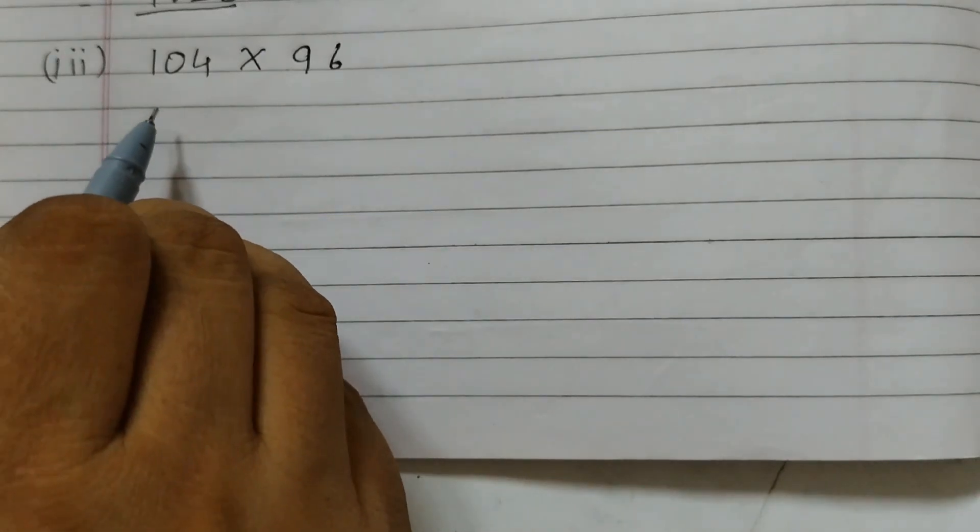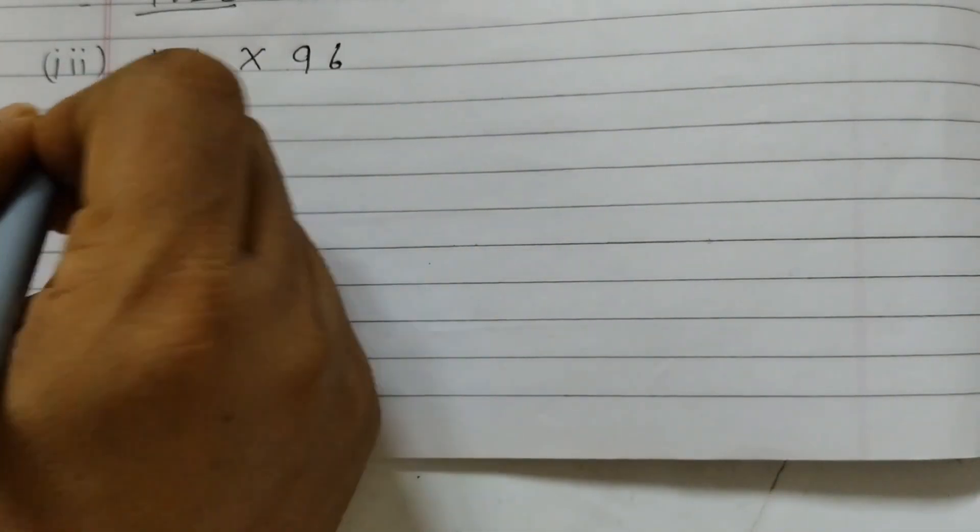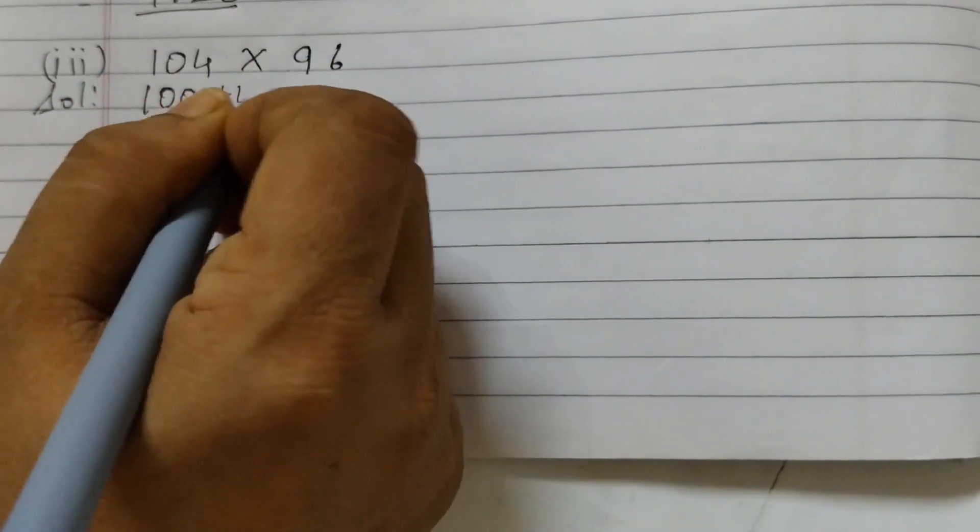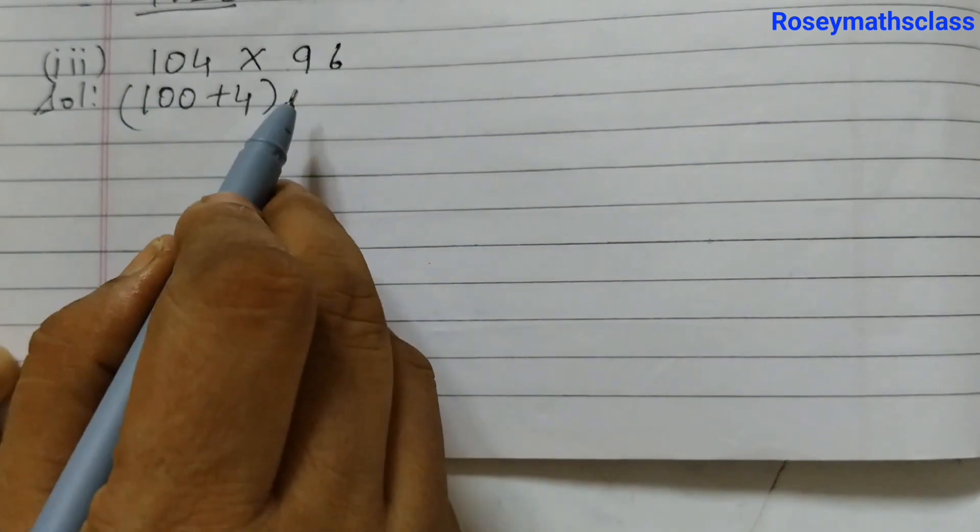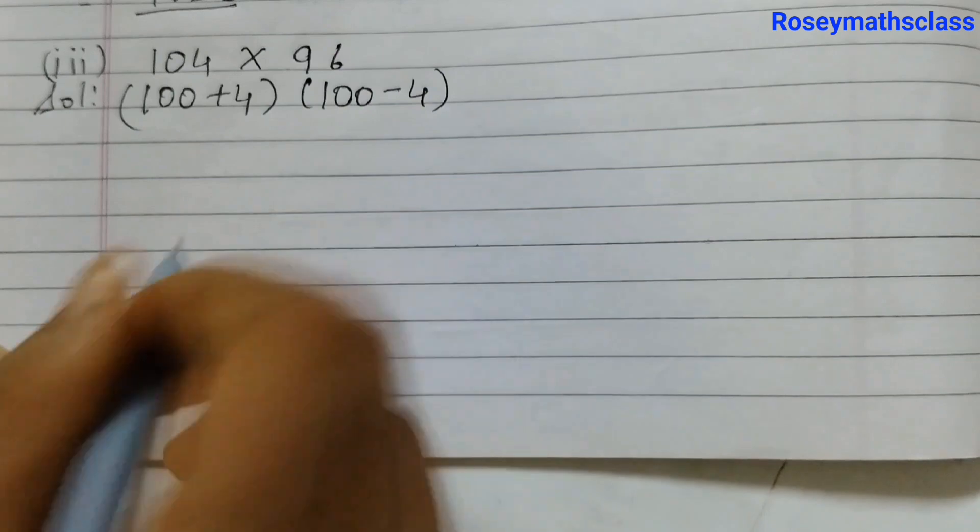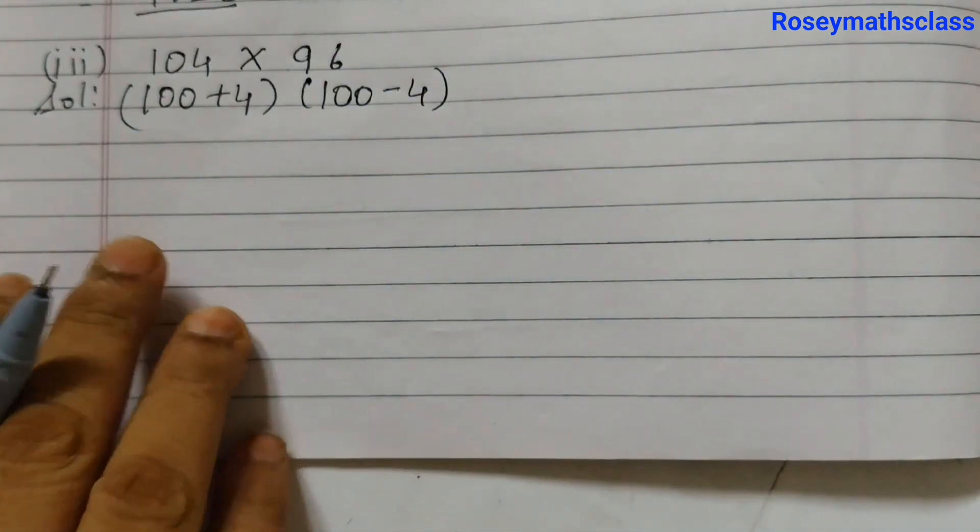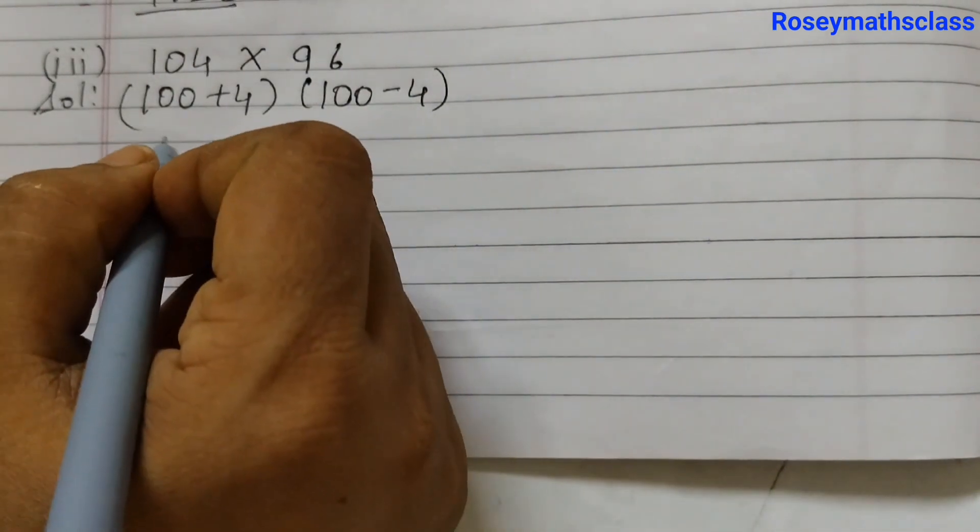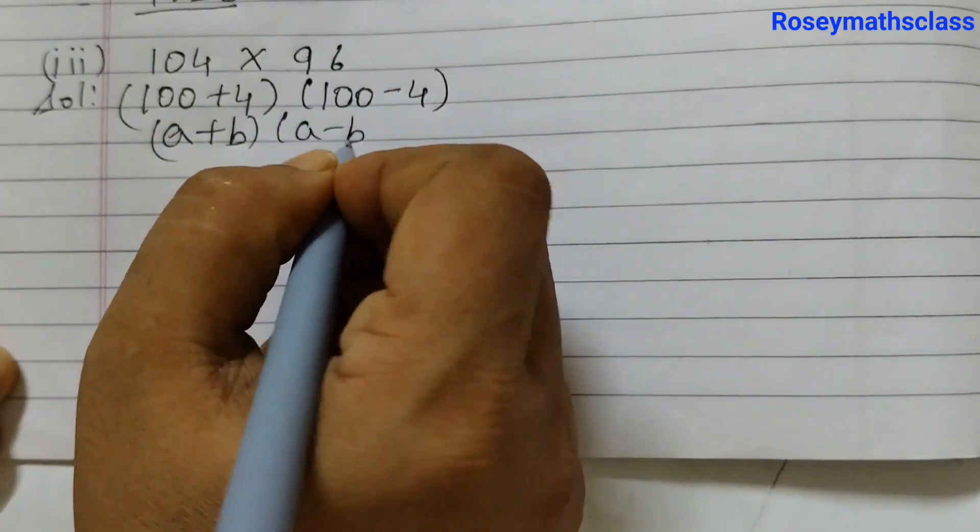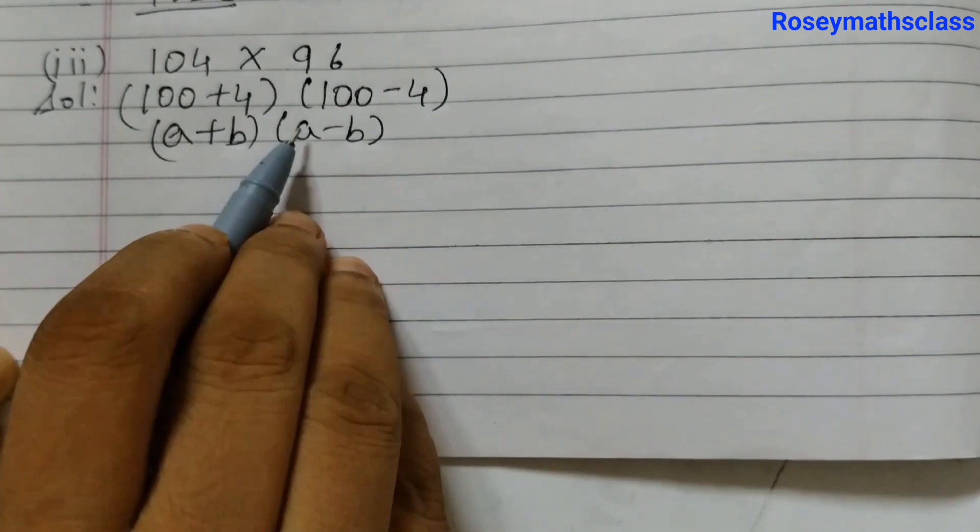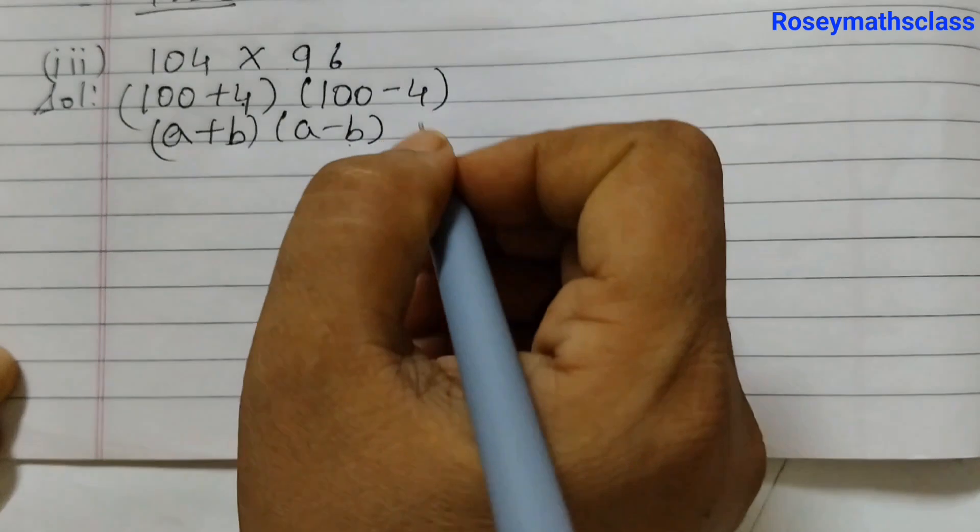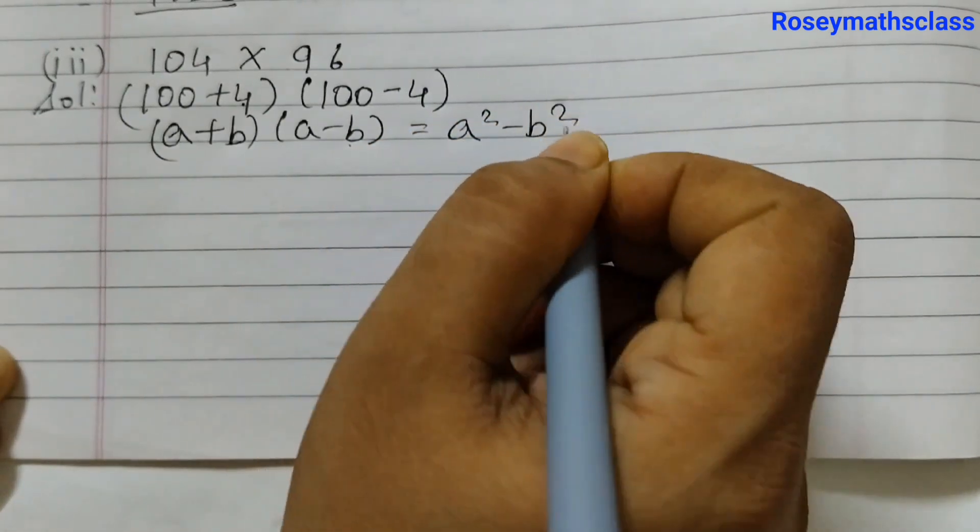Third and the last problem: 104 into 96. So this can be written as 100 plus 4 is 104, and 96 we can write as 100 minus 4. So the identity that we will use is (a+b)(a-b), because here a is 100, b is 4.